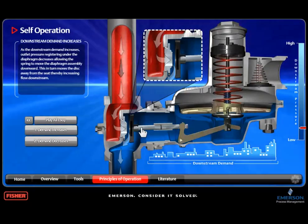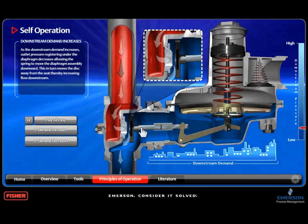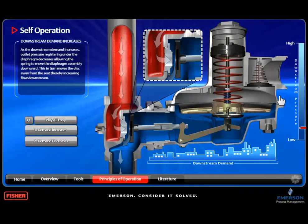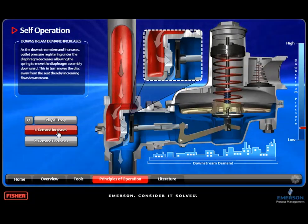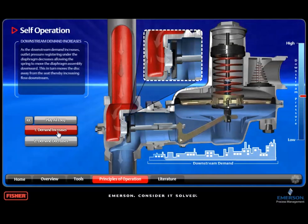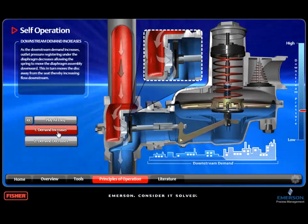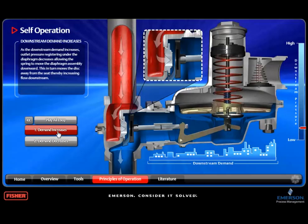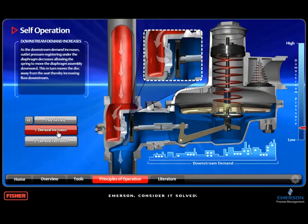Let's watch the animation again. This time pay attention to the pressure gauge shown on the right side of the screen and the downstream demand gauge below on the regulator. In order for the regulator to open to meet the increasing demand, outlet pressure has to decrease, and the outlet pressure will stay in place as long as the flow demand is high.